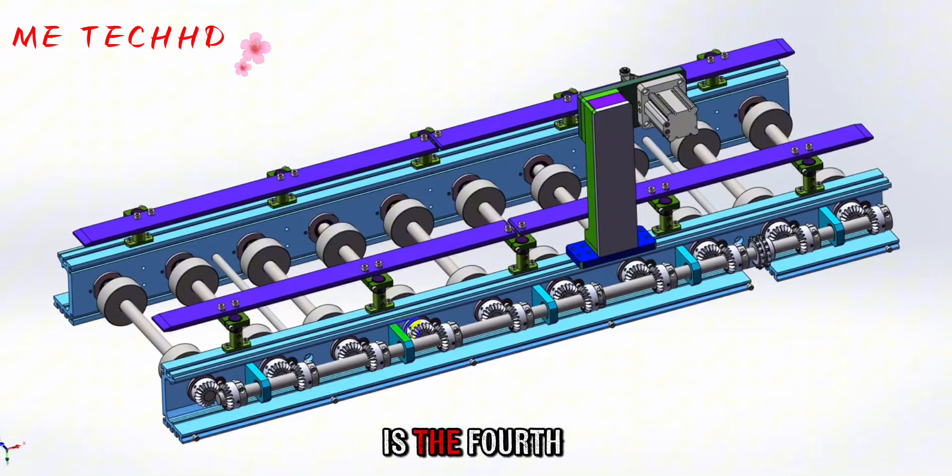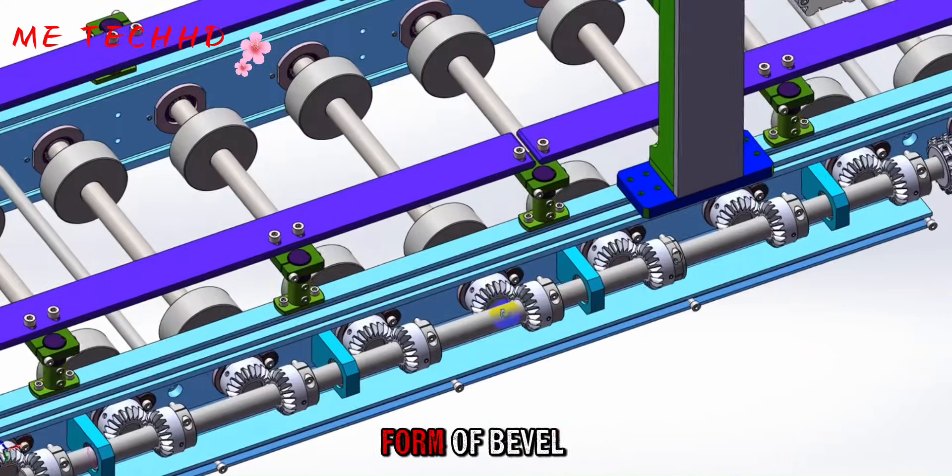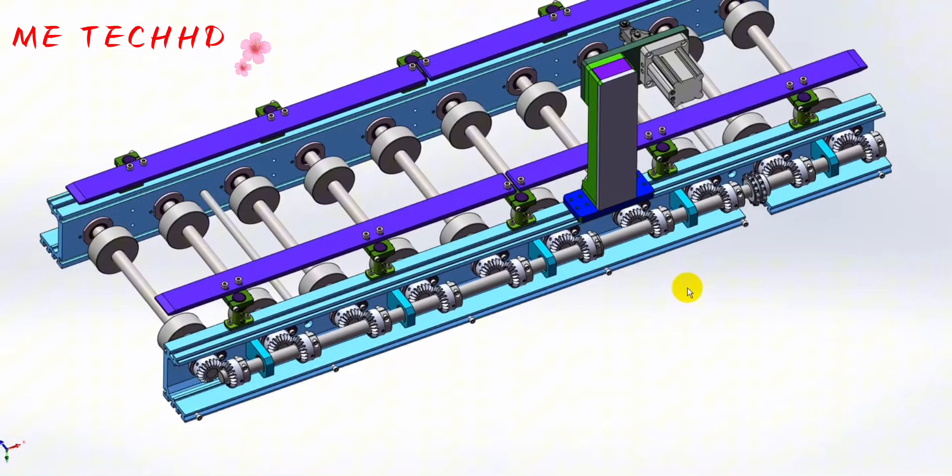The fourth type uses a rack and pinion, a gear called a bevel gear. As you can see when it's transporting, its load-bearing ability will be greater.